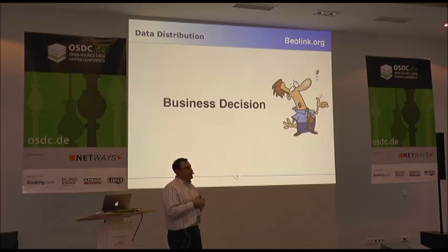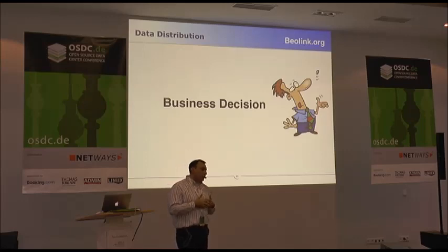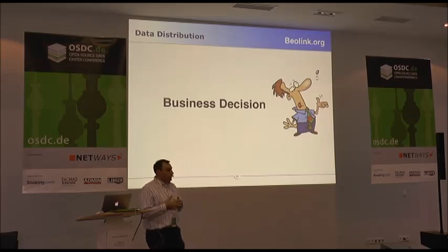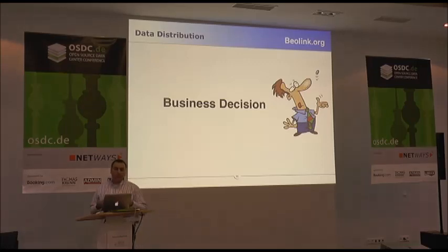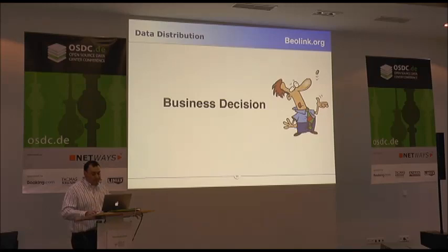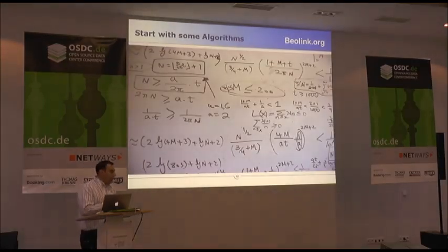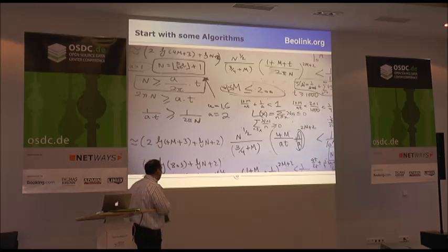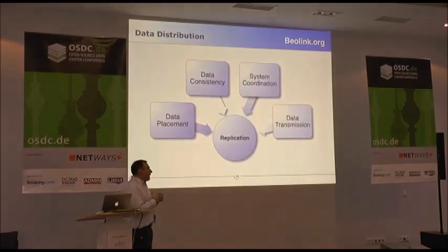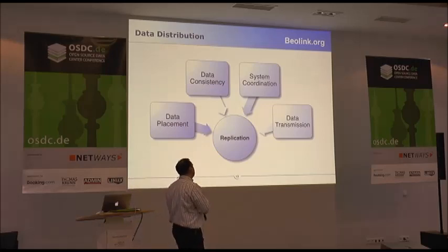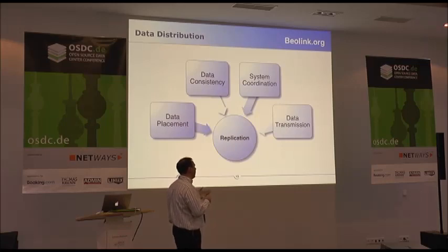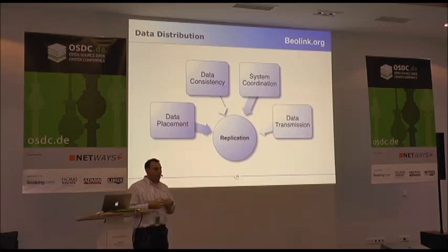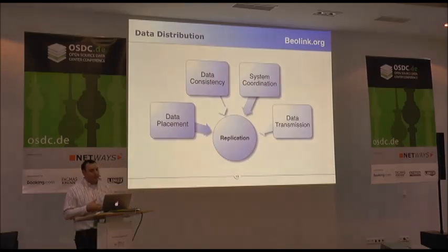It's mainly a business decision — you have to talk with your business stakeholders and agree, because it has a big impact on the business. Now we will start with some formulas. We can divide the problem into more or less four elements: data placement, data consistency, system coordination, and data transmission. These are the four main topics in data replication.